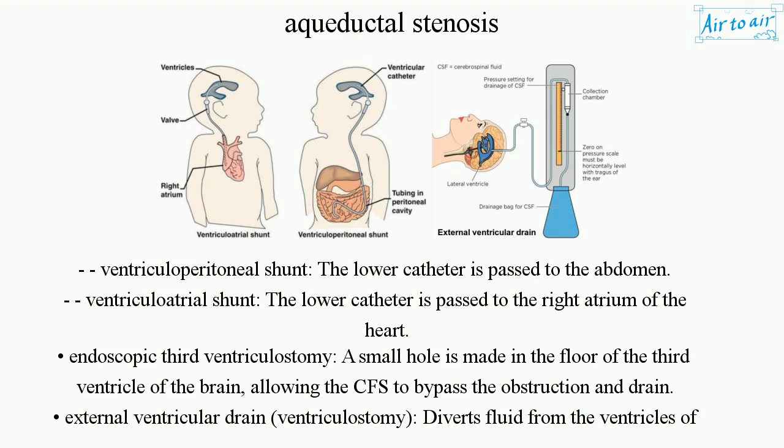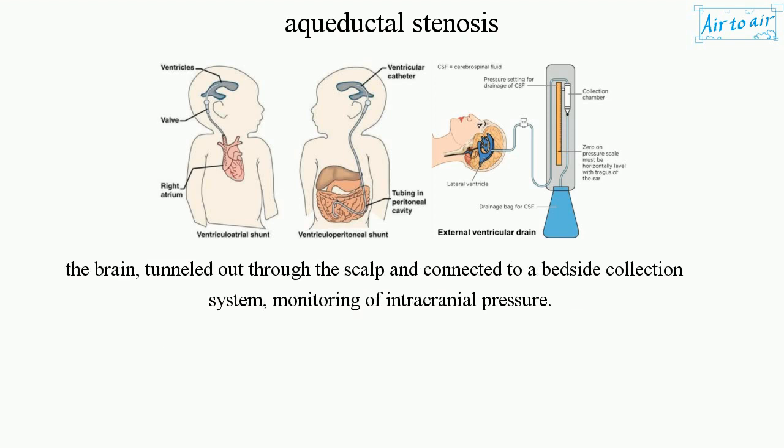Endoscopic third ventriculostomy: a small hole is made in the floor of the third ventricle of the brain, allowing the CSF to bypass the obstruction and drain. External ventricular drain ventriculostomy diverts fluid from the ventricles of the brain, tunneled out through the scalp and connected to a bedside collection system, for monitoring of intracranial pressure.